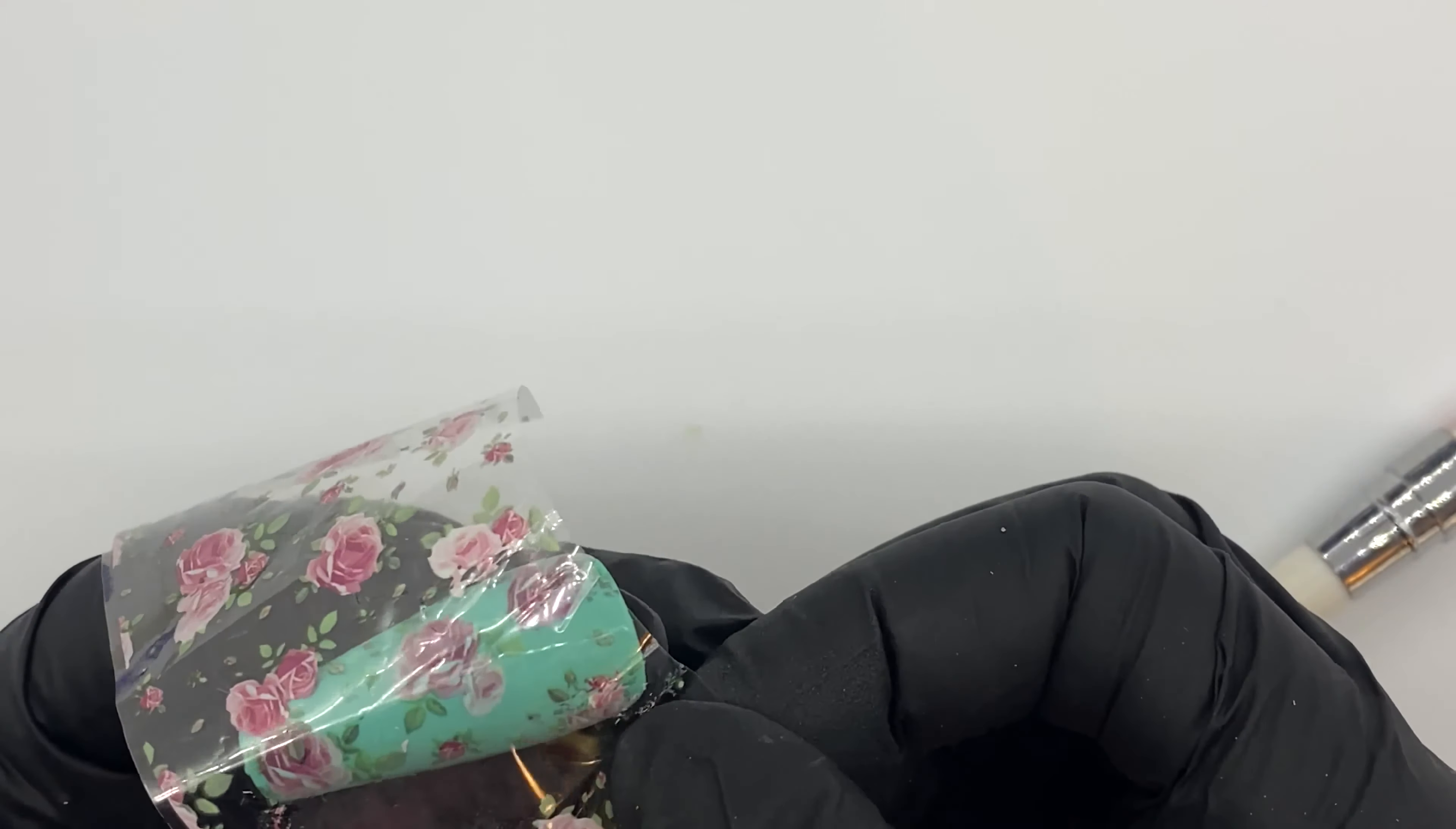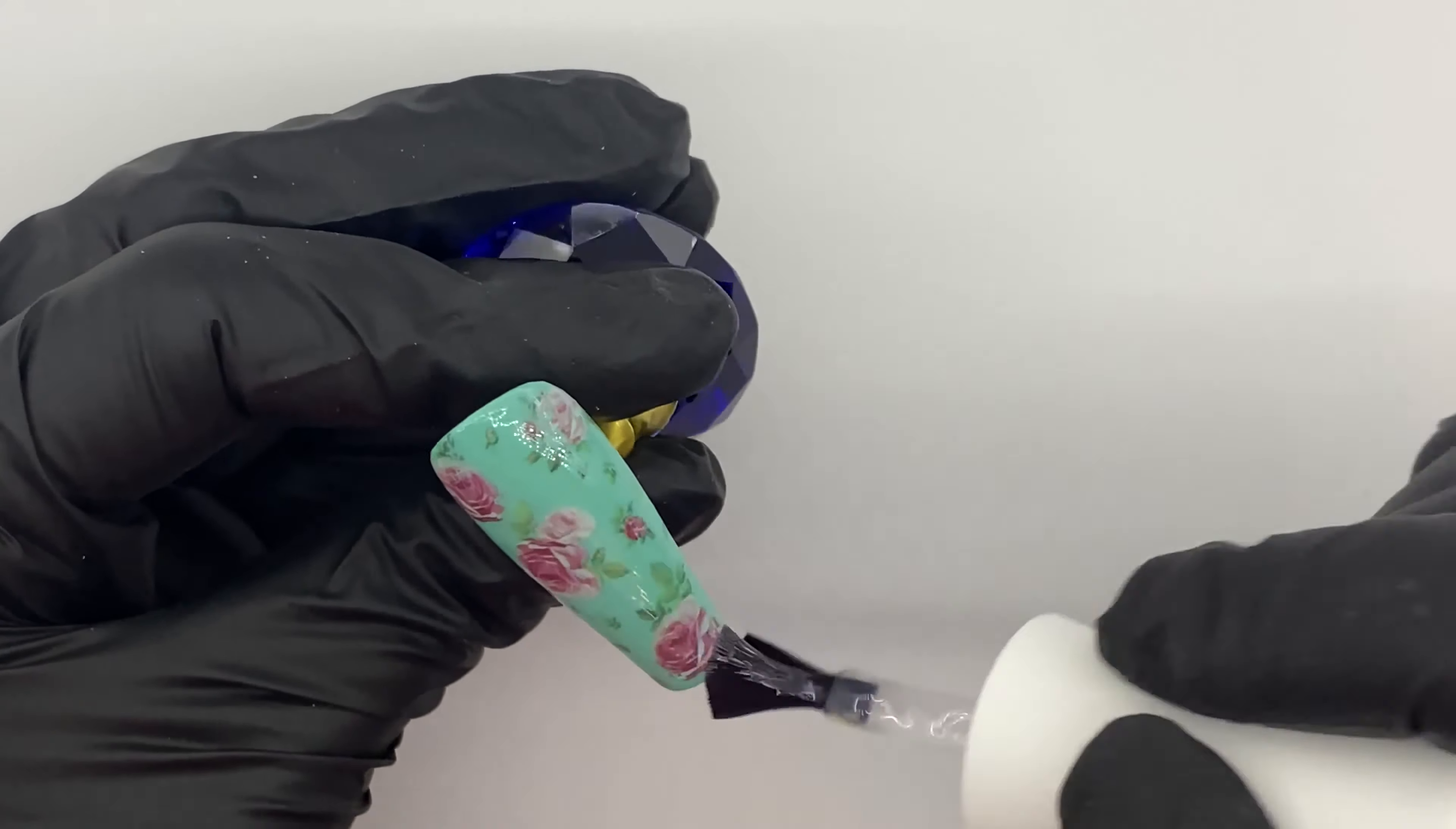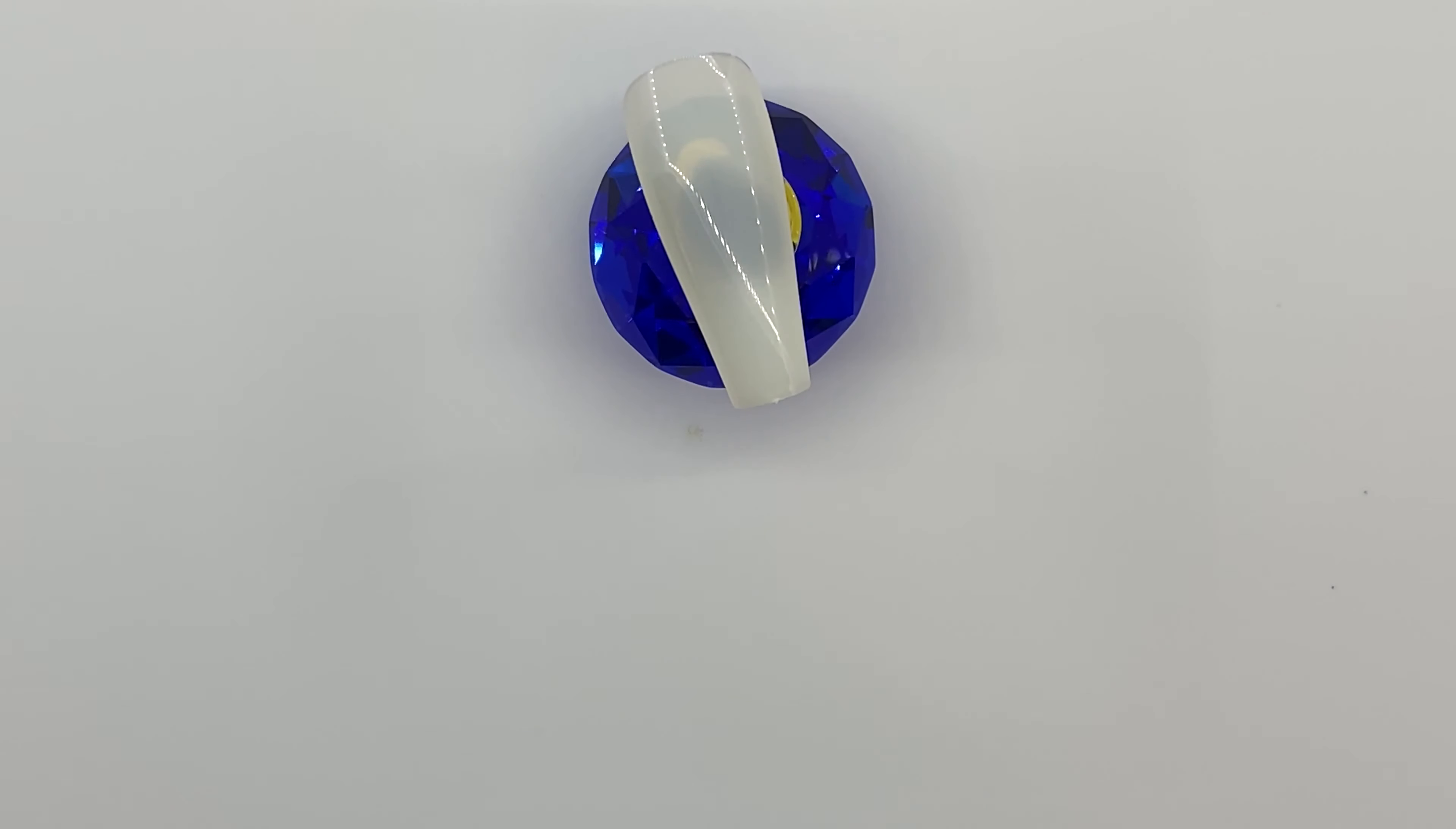Then I go over this with a matte top coat and pop that in for a cure. This foil is so pretty from Nail Sugar, I love it over that color.